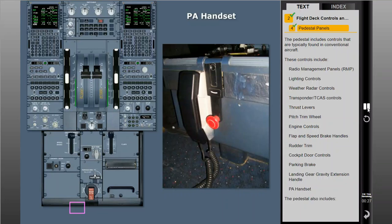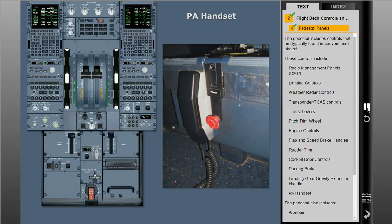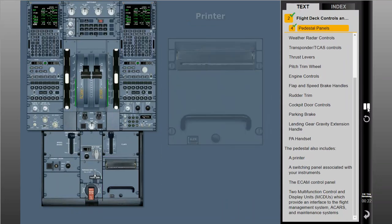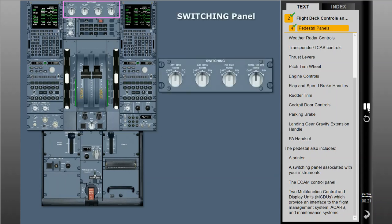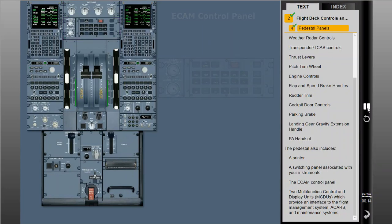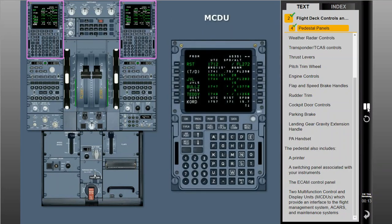The pedestal also includes a printer, a switching panel associated with your instruments, the ECAM control panel, and two multi-function control and display units, or MCDUs, which provide an interface to the flight management system, ACARS, and maintenance systems.